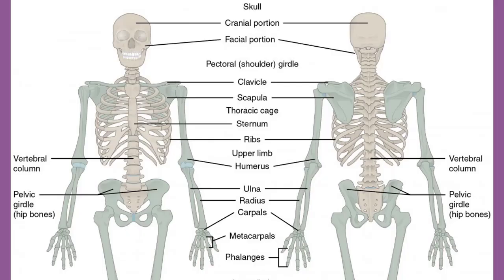The skeletal system forms the rigid internal framework of the body, and it consists of the bones, cartilages, and ligaments. Bones support the weight of the body, allow for body movements, and protect internal organs. Cartilage provides flexible strength and support for the body's structures such as the thoracic cage, the external ear, and the trachea and larynx. At joints of the body, cartilage can also unite adjacent bones or provide cushioning between them. Ligaments are the strong connective tissue bands that hold the bones at the movable joint together and serve to prevent excessive movements of the joint that would result in injury.